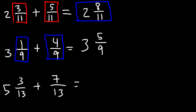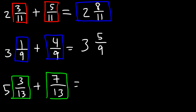And for the final example, we just need to add 3 over 13 plus 7 over 13. 3 plus 7 is 10, so it's 5 and 10 over 13. And that's it.